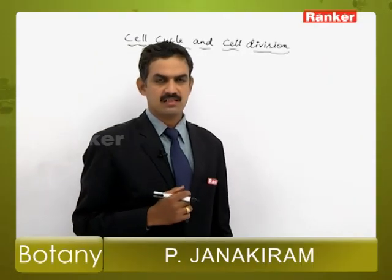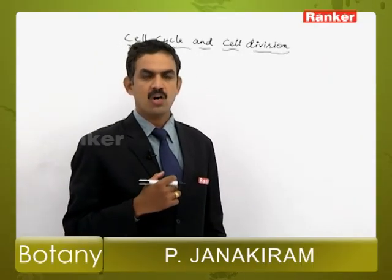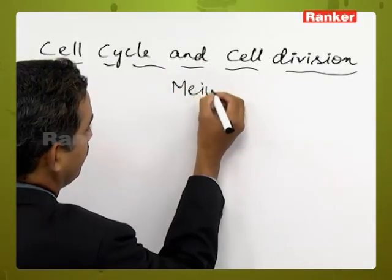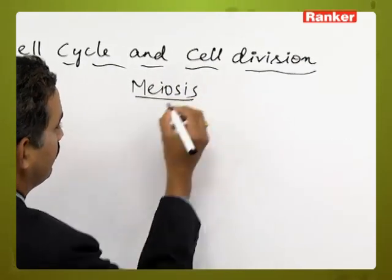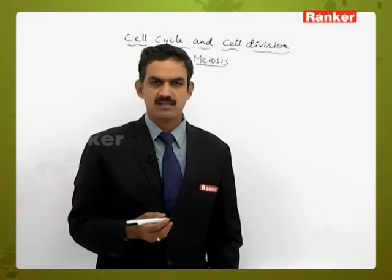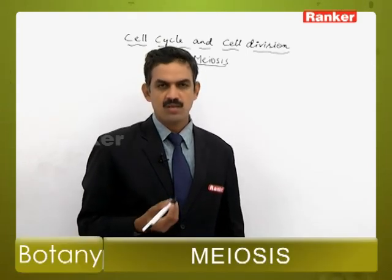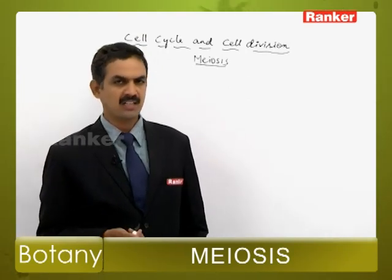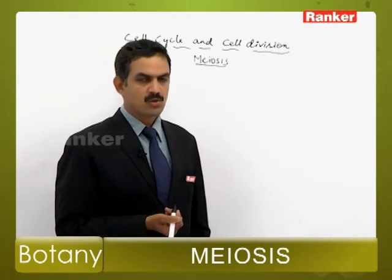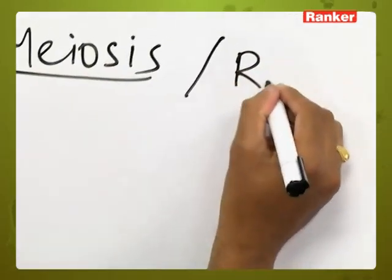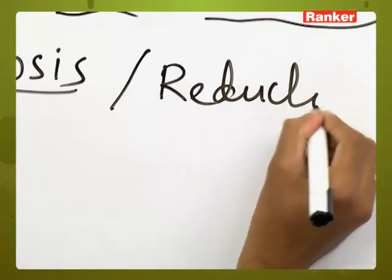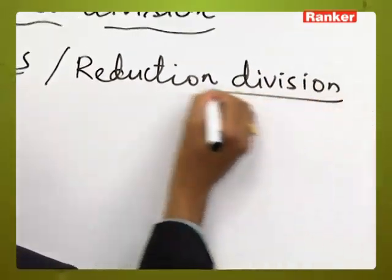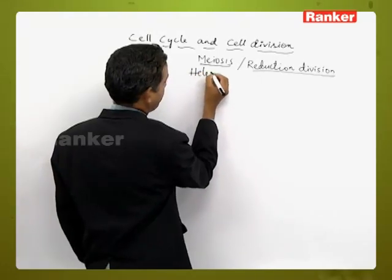In cell divisions, the second type of cell division, or indirect type of cell division, is meiosis. Meiosis is otherwise called as reduction division or heterotypic division. We are going to discuss how meiosis takes place, at which stages it occurs, what stages are present in meiosis, and its significance.